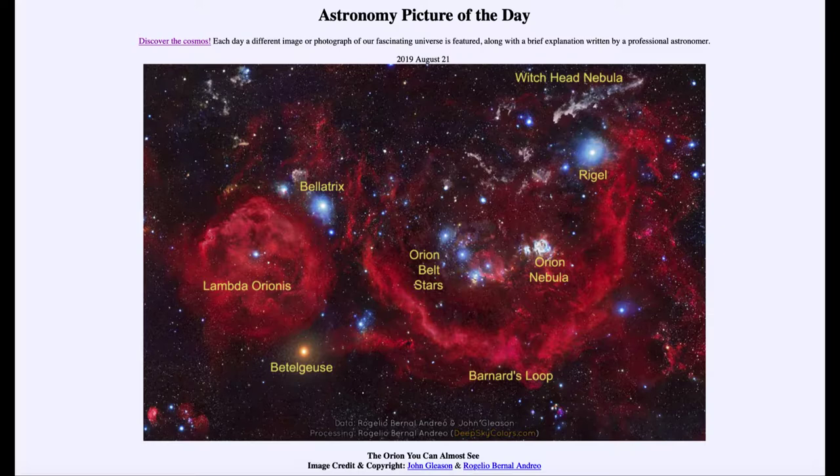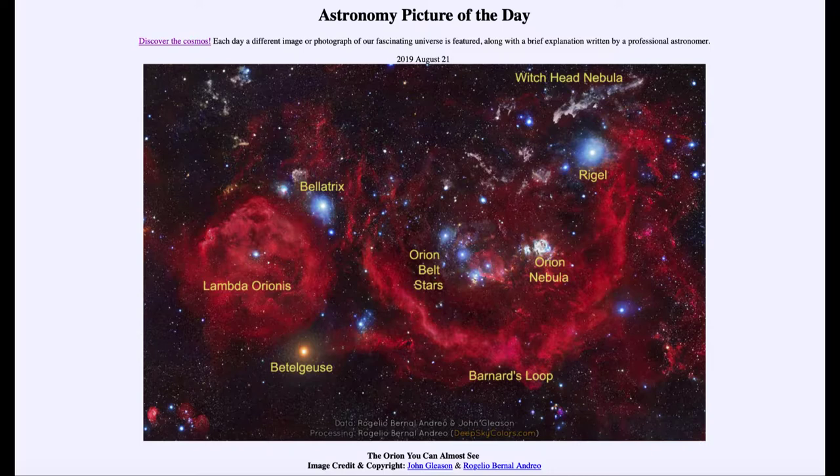Now that is because the color of the star tells us about its temperature. So a star like Betelgeuse is about half the temperature of the sun, or maybe about 3,000 degrees. Whereas stars like Rigel that are much hotter could be tens of thousands of degrees.